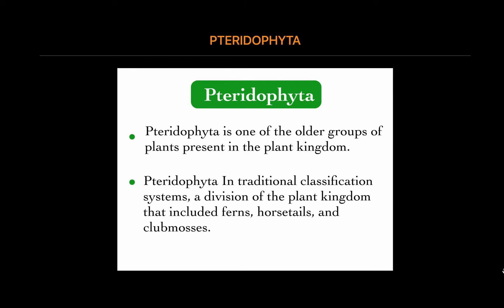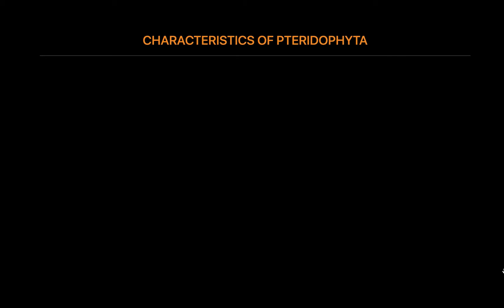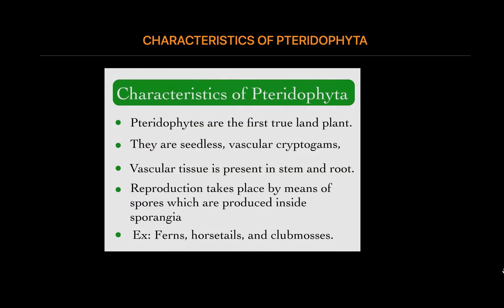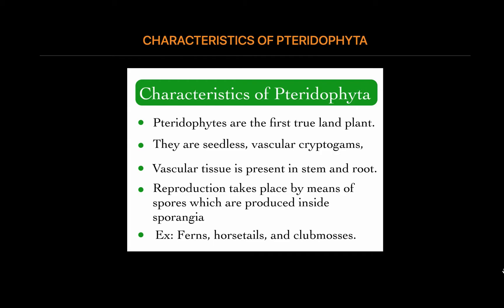These plants are also known as vascular cryptogams or snakes of the plant kingdom. They are represented by about 400 living and fossil genera and some 10,500 species. Pteridophytes are seedless and procreate through spores. They don't have conducting tissues for transportation of water and minerals; instead, water and minerals flow from the surface of the plant cell to cells in the plant's body. This is also why these plants need a constantly moist environment to survive.